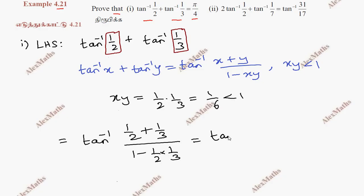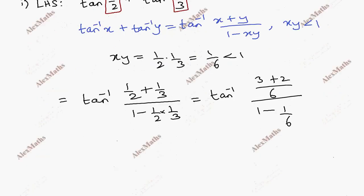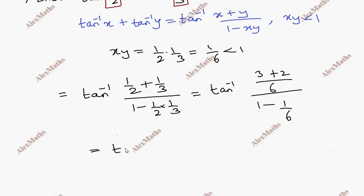The numerator is 3 plus 2 over 6, which equals 5 by 6. The denominator is 1 minus 1 by 6, which is 5 by 6. So we get tan inverse of (5 by 6) divided by (5 by 6). The 5 by 6 cancels, giving tan inverse 1.